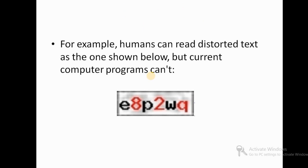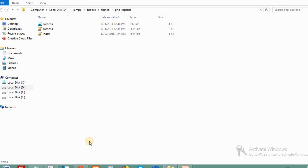For example, the text 'E8P2WQ' is a disordered text that a human can read but a computer cannot, because the text is not in a proper uniform format — it is blurred and distorted. That is what is meant by CAPTCHA.